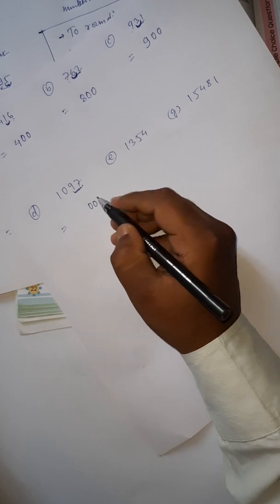For 15481, make the ones and tens digits 00. Look at the tens digit — it is 8, more than 5. So add 1 to the hundreds place: 4 plus 1 is 5. Answer is 15500. So this is how you find the round of a number to the nearest ten and nearest hundred.